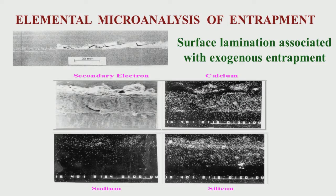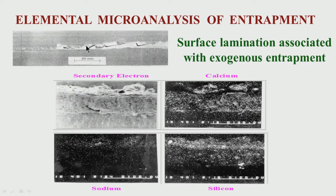Let us try to see how surface lamination looks like and how we decide the source of the problem. A surface lamination in the product looks like the surface is getting sort of torn. This is because of some large entrapment which causes this surface problem in the final rolled product, whether it is a hot roll or cold roll product. Surface lamination is basically additional surface getting generated, and it has been found that they are associated with exogenous entrapment.